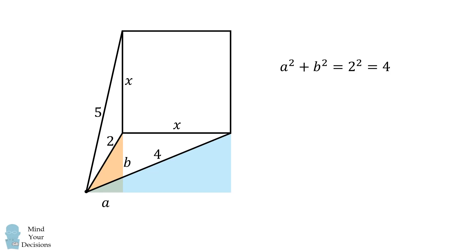Consider then the following right triangle. One leg is equal to a plus x, and the other leg is equal to b. Therefore, we have the quantity a plus x squared plus b squared is equal to 4 squared, and that's equal to 16.